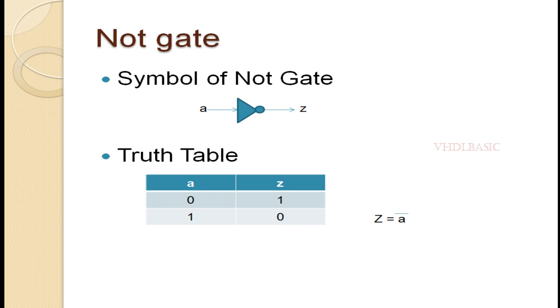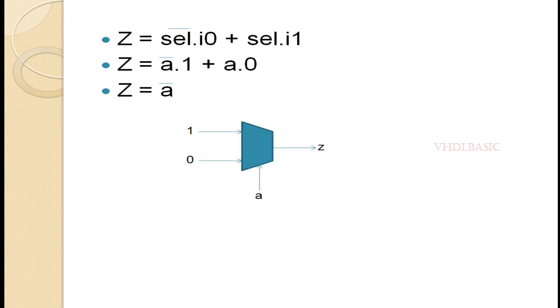Now we are going to see how to implement a NOT gate using a 2:1 MUX. I am taking the basic expression of the 2:1 MUX: z equals (not select AND i0) OR (select AND i1). Here, instead of select I am going to connect a, instead of i0 I am going to connect VCC or 1 or high, and instead of i1 I am going to connect ground or 0 or low.